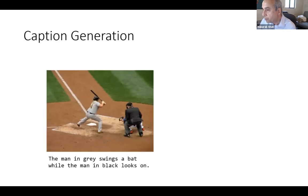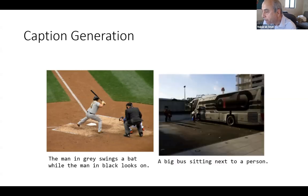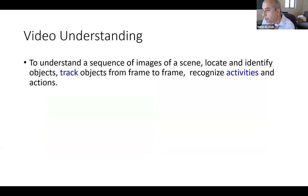So far we are able to do this: given an image like this, a computer can automatically generate a caption. It would say 'the man in gray swings a bat while the man in black looks on' — which is pretty good. Another example: 'a big bus sitting next to a person' — generated by a computer.